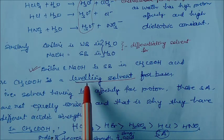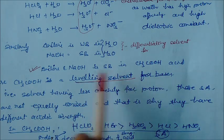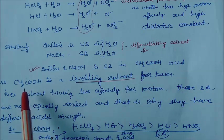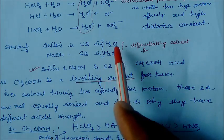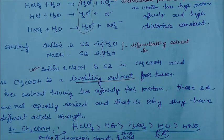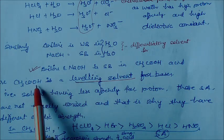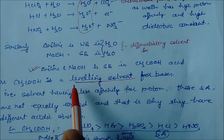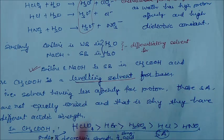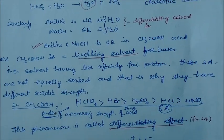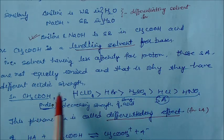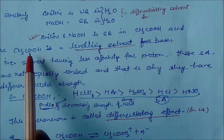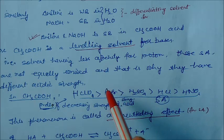In acetic acid both bases act as strong bases, so acetic acid acts as a leveling solvent and the effect is a leveling effect. We can compare water and acetic acid here. Acetic acid has less affinity for proton, and in acetic acid strong acids are not equally ionized. That is why acetic acid acts as a differentiating solvent for strong acids.